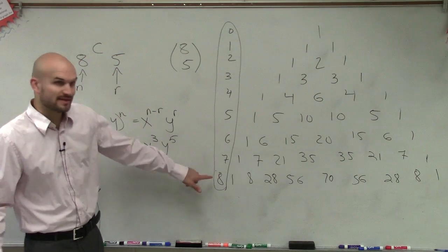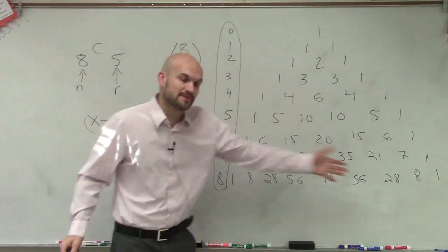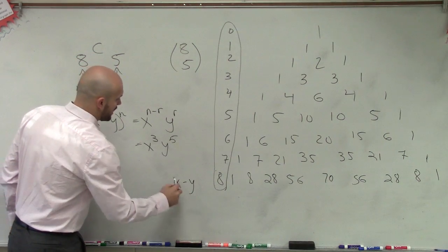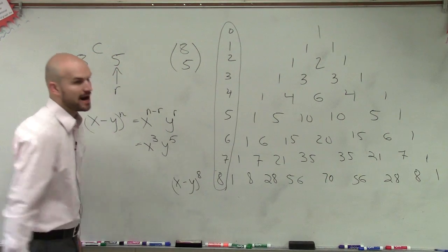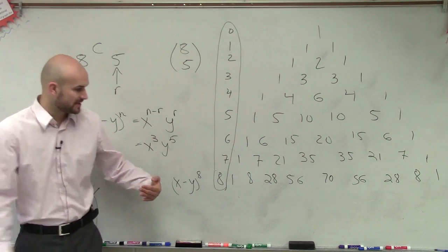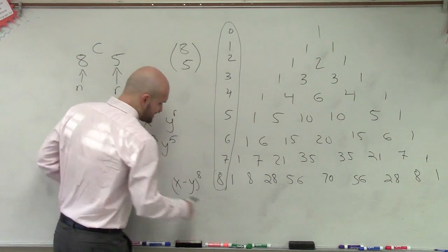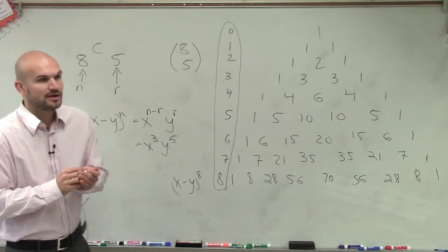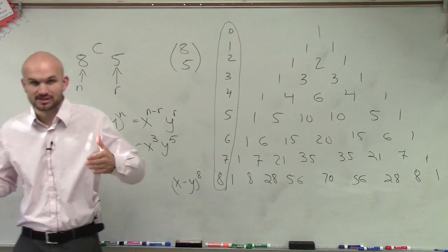So this is what this represents. Then this line represents our expansion of x minus y to the 8th power. Now remember, when we're going through this, if you remember how we started with Pascal's Triangle, remember that the exponents of the x, or our first term, they start to decline, right?